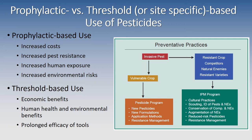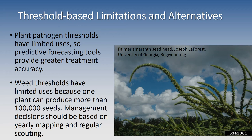Threshold-based limitations and alternatives also have to be considered. Plant pathogen thresholds have limited uses, so we often use predictive forecasting tools because they provide greater treatment accuracy. Weed thresholds also have limited uses because one plant can produce more than a hundred thousand seeds. With weed management, decisions should be based on yearly mapping and regular scouting of fields. Here we have an image of a Palmer amaranth seed head — these are very large and produce hundreds of thousands of seeds per plant.